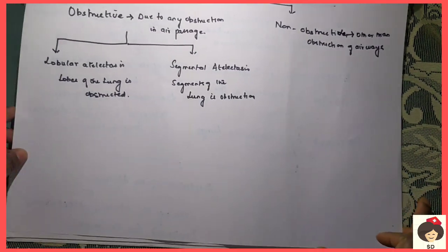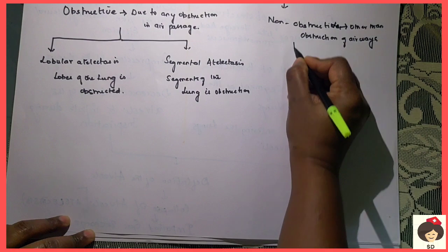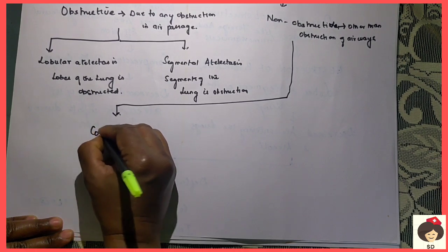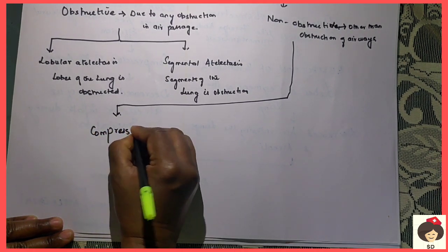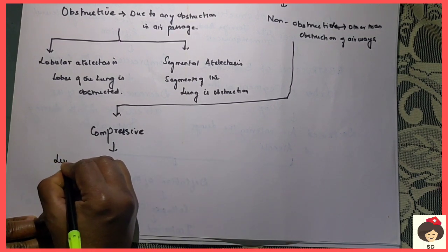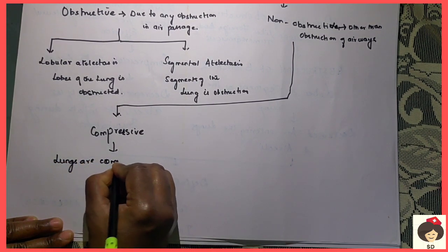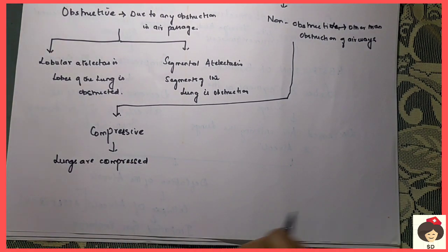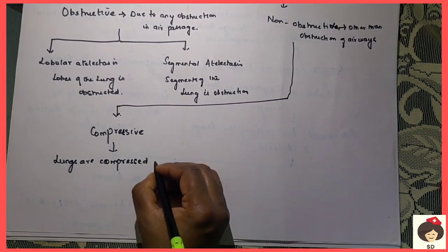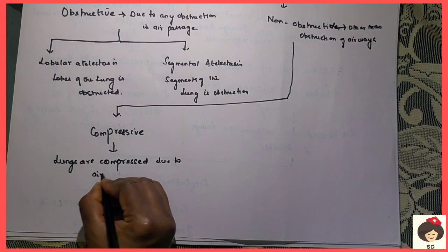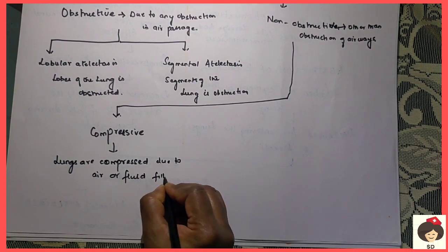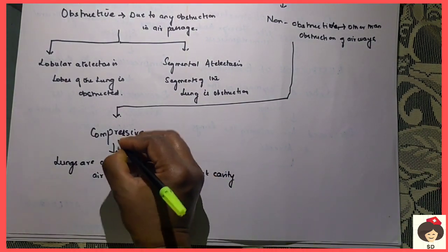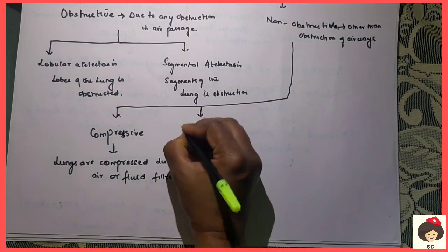Coming to non-obstructive Atelectasis, it is again divided into several types. The first type is compressive Atelectasis. Compressive Atelectasis means the lungs are compressed due to any air or fluid filled in the thoracic cavity or the pleural cavity, which is causing compression of the lungs. When it is due to such compression, we call it compressive Atelectasis.